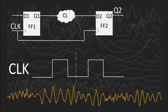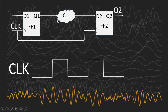Since we have not considered skew in this case, the same clock is going to all the flip-flops inside the design. So flip-flop 1 and flip-flop 2 will receive the clock edges at the same time. Let us assume that flip-flop 1 and flip-flop 2 are both working on the positive edge of the clock — that is, they are positive-edge-triggered flip-flops.